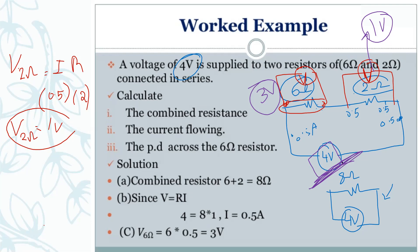The voltage is divided onto the resistances — the current remains the same, and the resistance is different. To summarize: the first step is to find the combined resistance by adding all resistances since they are connected in series.